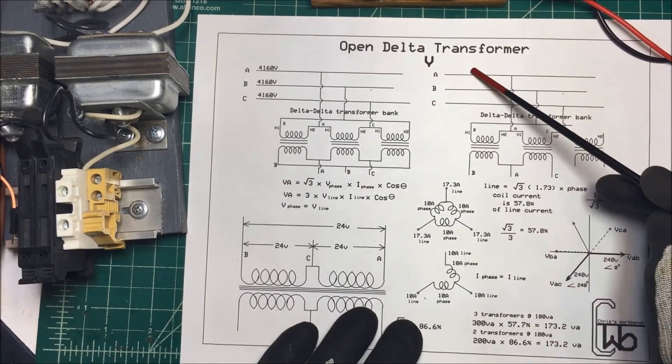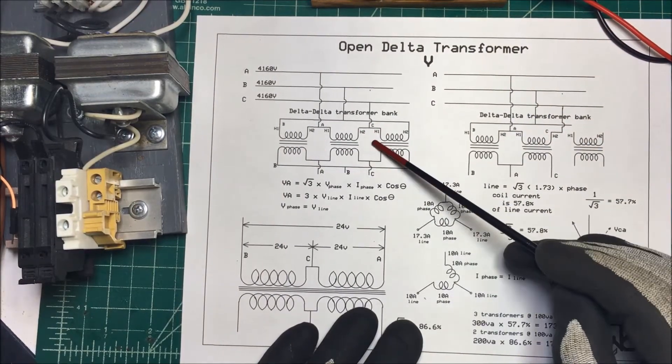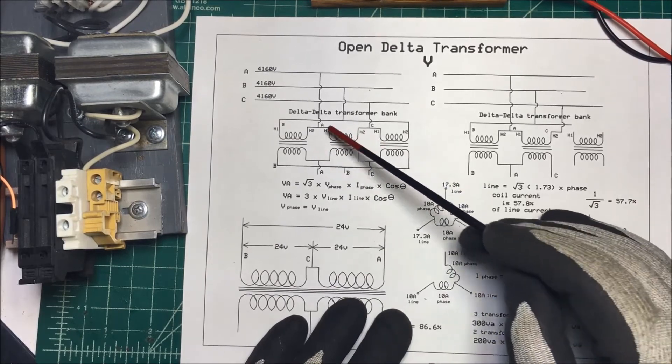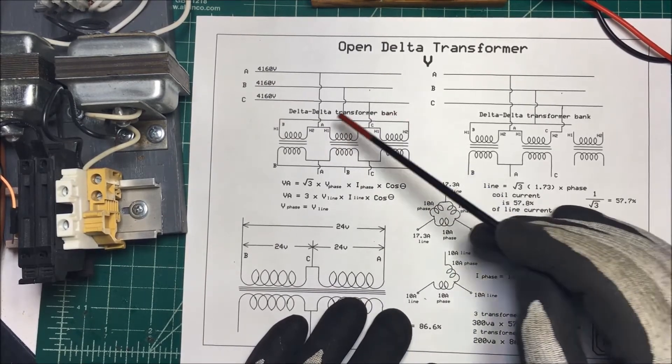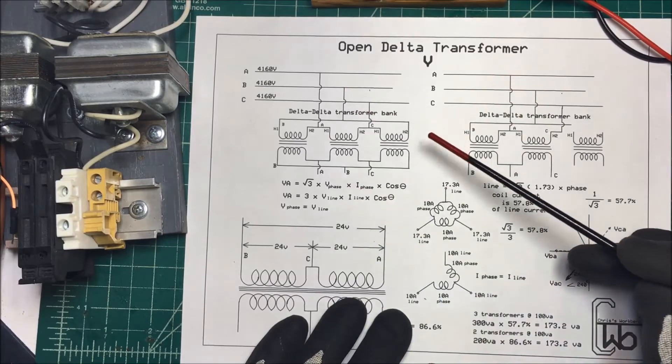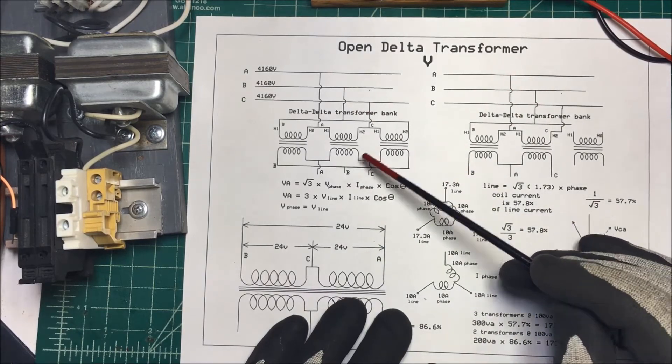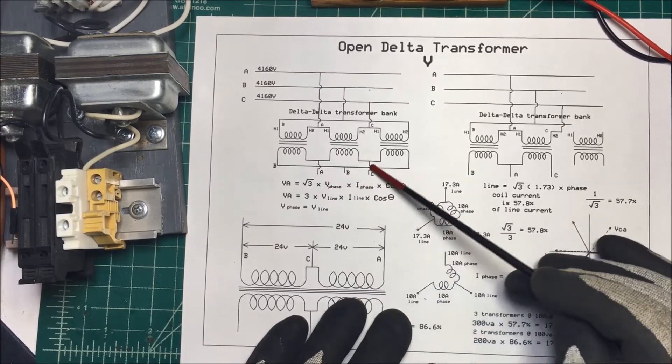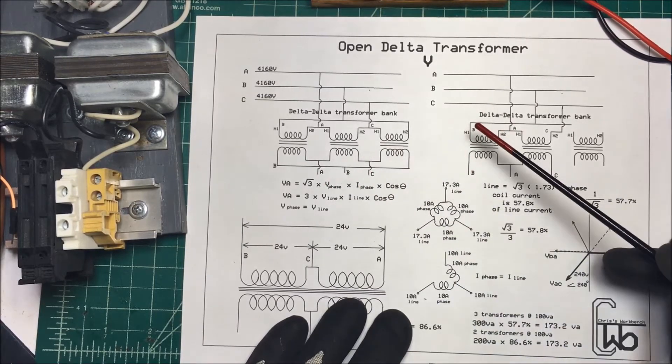Let's take a look at an open delta transformer. Now your typical transformer for a three-phase in North America here is set up like this. You'll have a delta-delta transformer bank. You'll see three separate transformers on a pole and you'll have your A, B, and C phase and each phase is they're 120 degrees apart and you get your three-phase power that way.